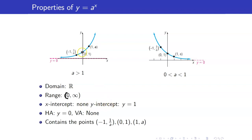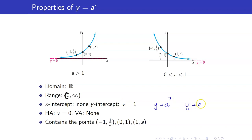For their y-intercept, both are equal to y equals 1. This is true because regardless of the value of a, if you have y equals a to the x, when solving for the y-intercept you set x to 0, and a to the 0 is equal to 1. For both of them, the horizontal asymptote is y equals 0. They do not have vertical asymptotes, and they contain the three points: negative 1, 1 over a; 0, 1; and 1, a. These three points are very useful whenever you're trying to sketch the graph.